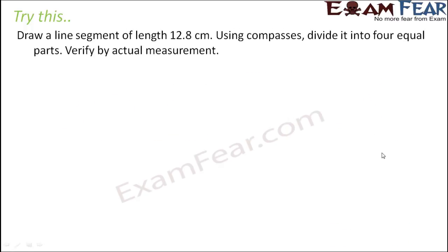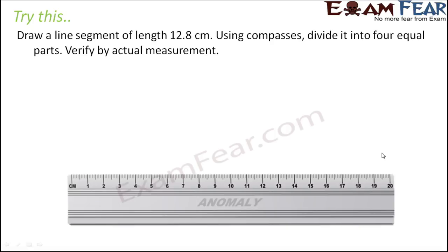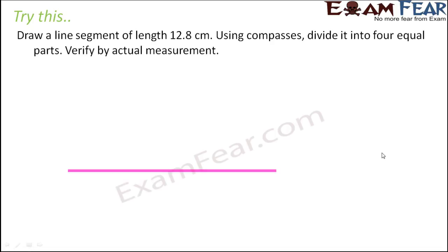Let's try this one. Draw a line segment of length 12.8 cm using compass, divided into 4 equal parts. Verify by actual measurement. So first let's draw a line segment of length 12.8 cm using a ruler. So let's say this is the line segment of the desired length.